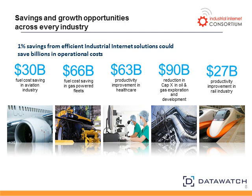In the consortium, we believe that across a wide variety of asset-intensive industries, the savings can be staggering by using this information effectively. A 1% savings in efficiency — look at the impact across different industries: 30 billion in aviation, 66 billion in gas-powered fleets, 63 billion in improvements in healthcare. One of the reasons we're focused on the industrial side of IoT is that it can have a tremendous impact across a wide variety of organizations and industries.